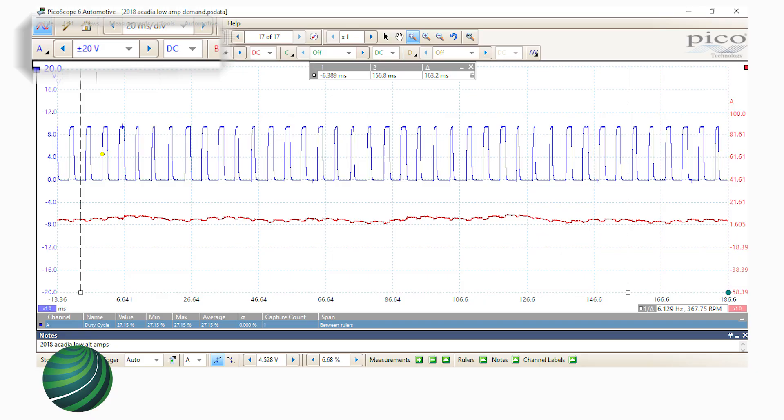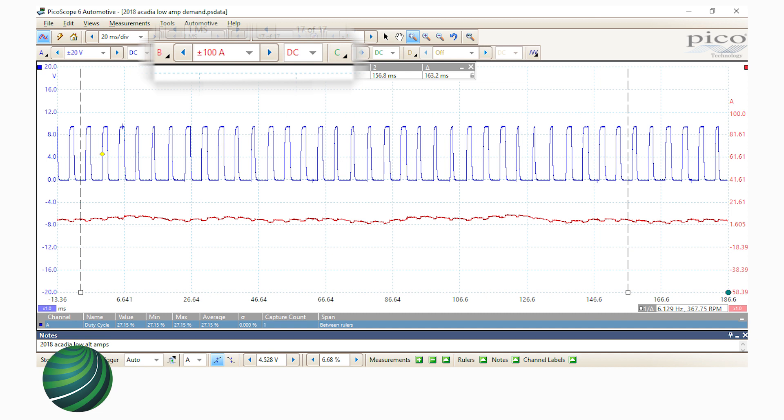Start the engine and allow it to idle. Set scope channel 1 to 20 volts DC and 20 milliseconds per division. Set scope channel 2 to 100 amp DC.